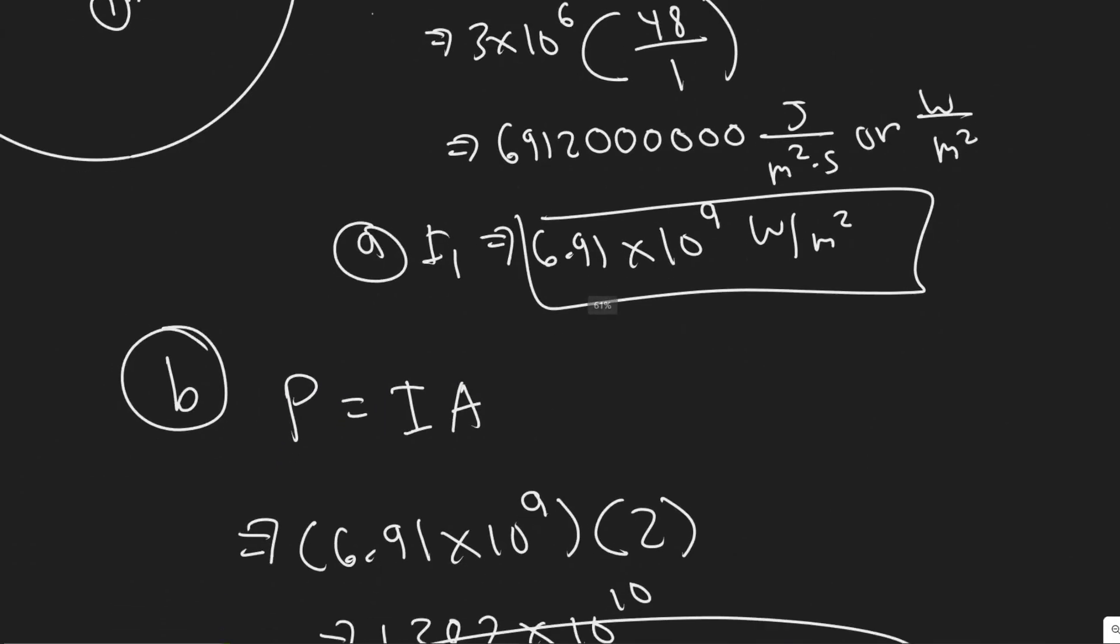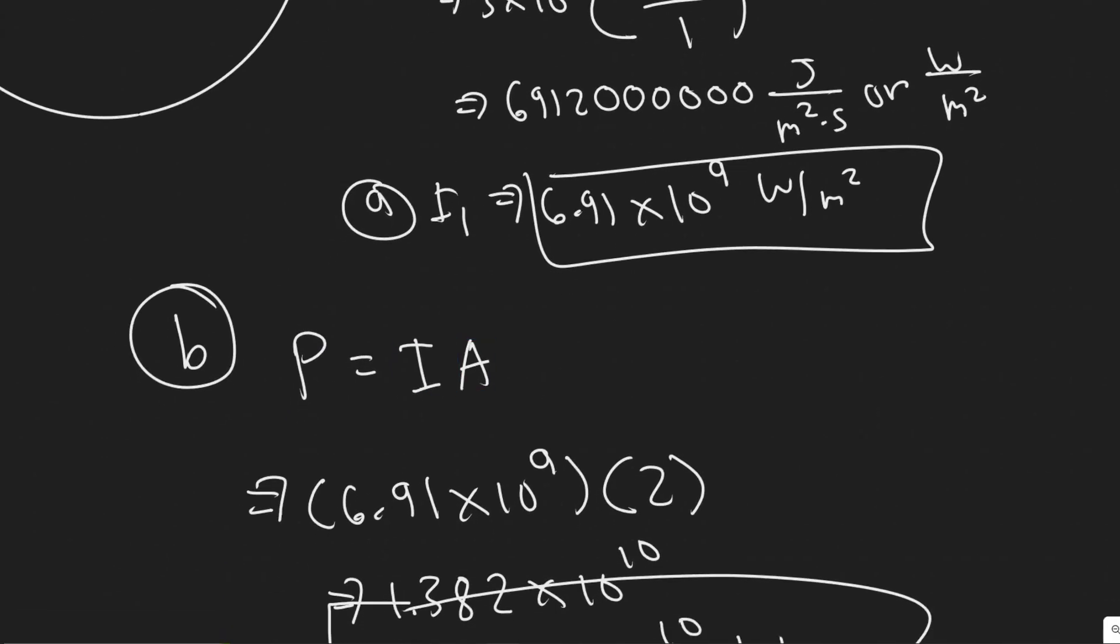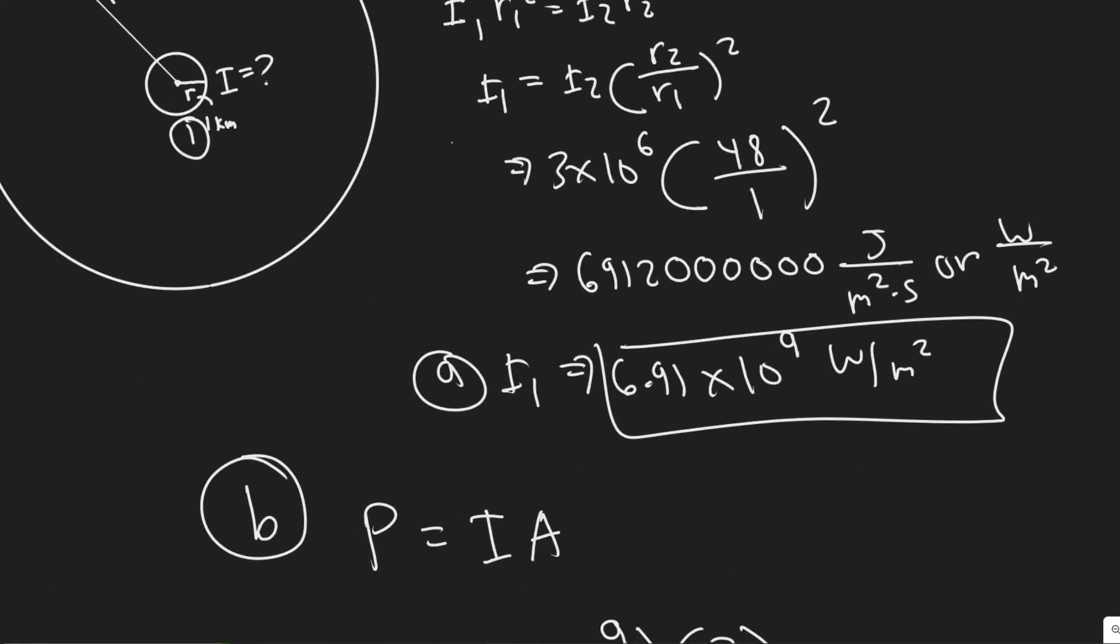And then for this one, it was just power equals intensity times area. And they give us the area and we solve for the intensity in the last problem, because they want it at one kilometer out.